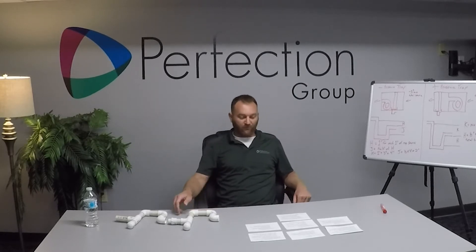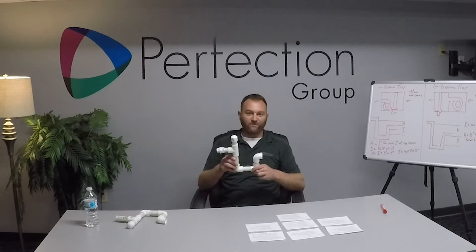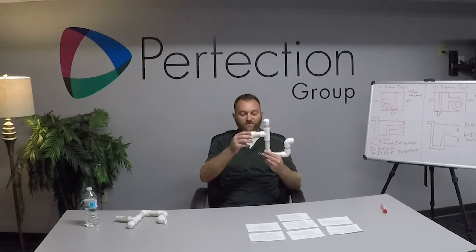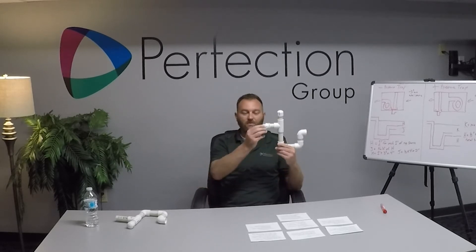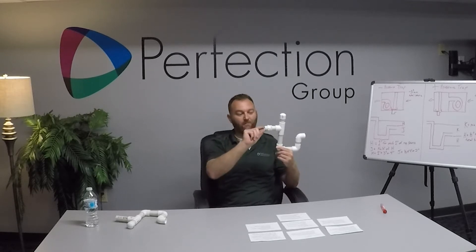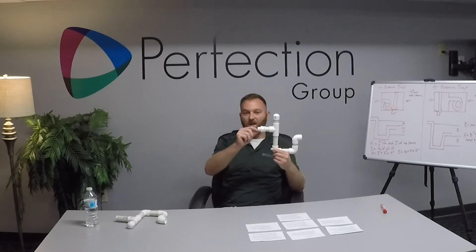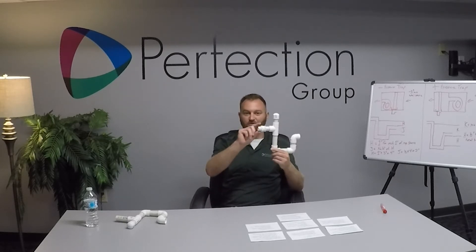Today we will discuss the proper construction of a trap. This is a negative pressure condensate trap. First thing you need to do is make sure you use the appropriate thread compound depending on what your condensate pan has for thread type — steel, copper — just make sure your thread compound is compatible.